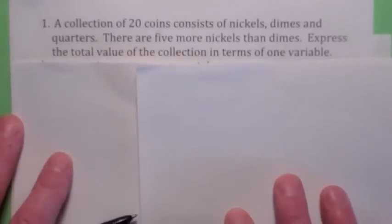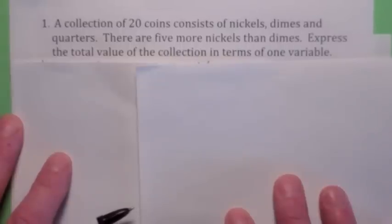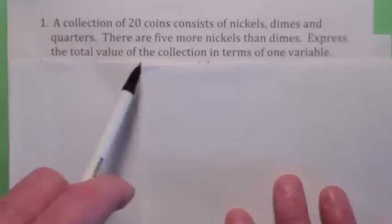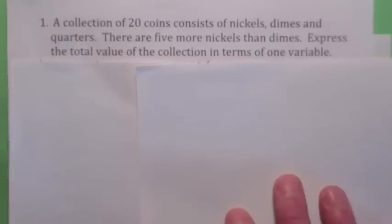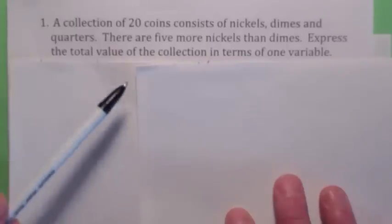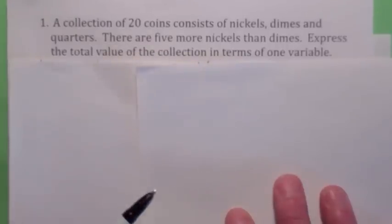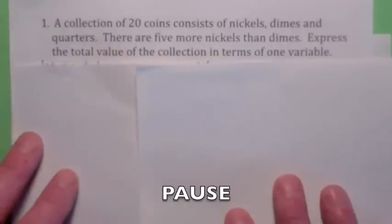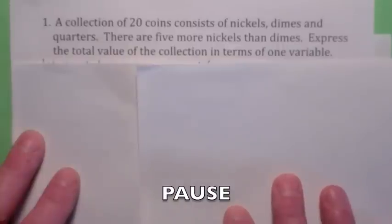Let's look at some applied problems. What we're going to be doing here is basically just coming up with the equation — not really solving anything, just finding the equation that expresses the total value of a collection of coins in terms of one variable. You've got nickels, dimes, and quarters, a total of 20 coins.